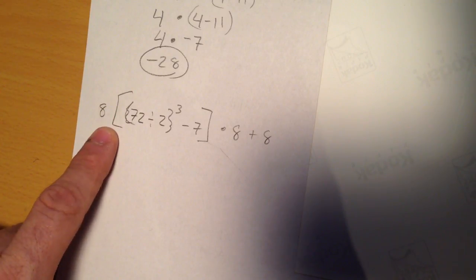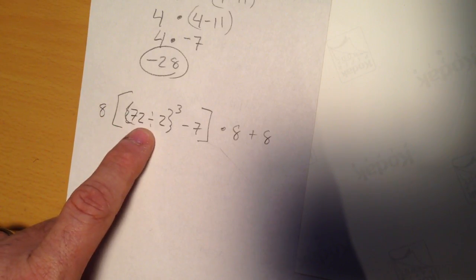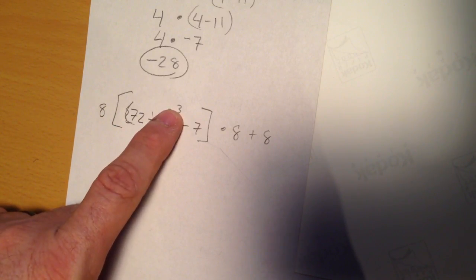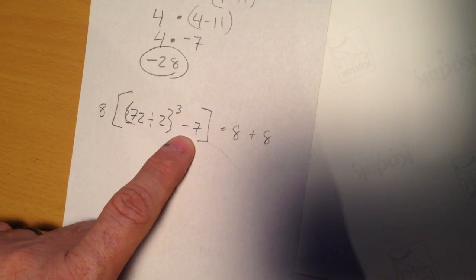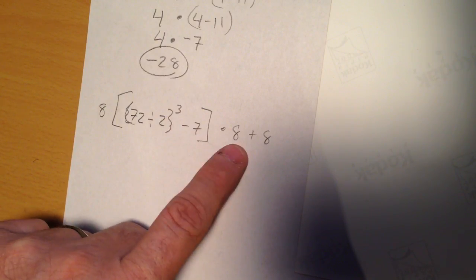So, I've got brackets, brackets, 72 divided by 2, brackets, to the third power, minus 7, end brackets, times 8 plus 8.